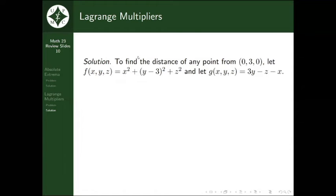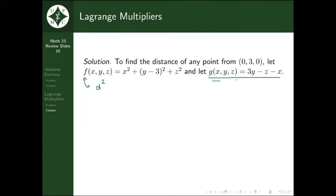To find the shortest distance, we define a function f(x, y, z) that calculates the distance from any point to (0, 3, 0). Note that f is actually the distance squared, not the distance itself. Since distance is positive, minimizing the distance squared is equivalent to minimizing the distance. Our constraint g(x, y, z) is the equation of the plane, rearranged so the right-hand side equals our function g.